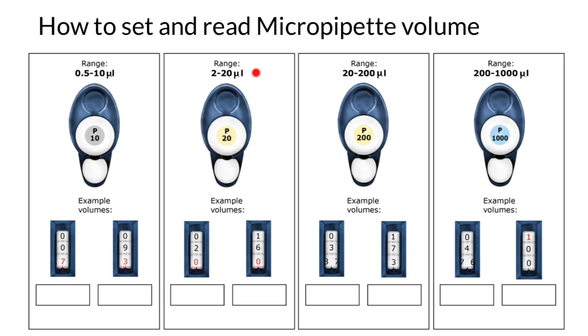For example, P20, the range is between 2 and 20 microliters. We only can work with this range. P200 between 20 and 200 microliters. And P1000 between 200 and 1000 microliters. 1000 microliters, as you now know, equals one milliliter.